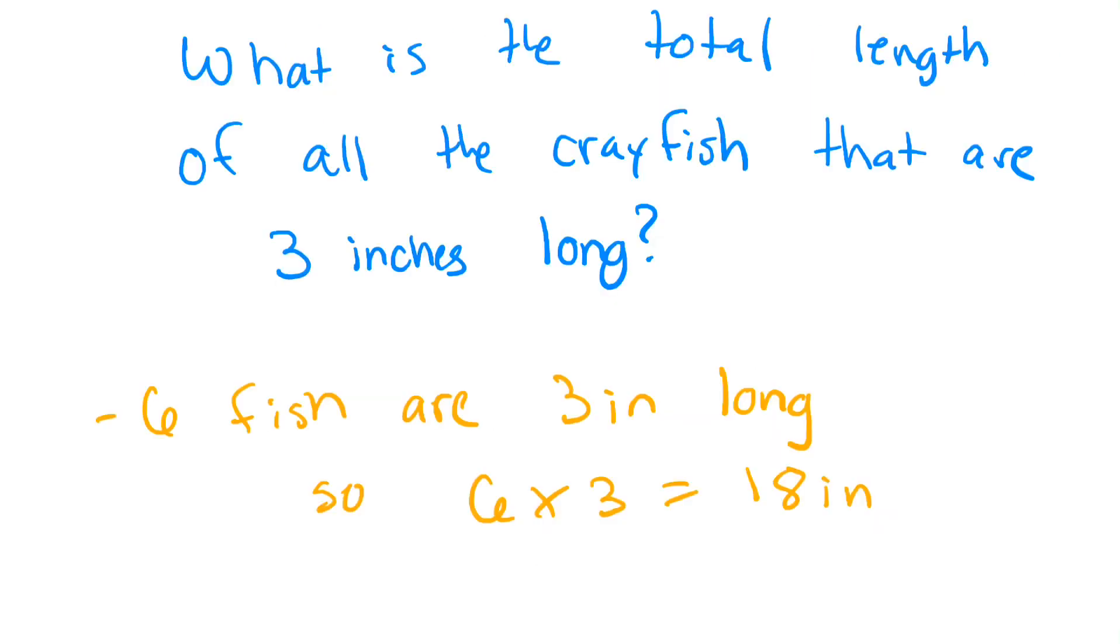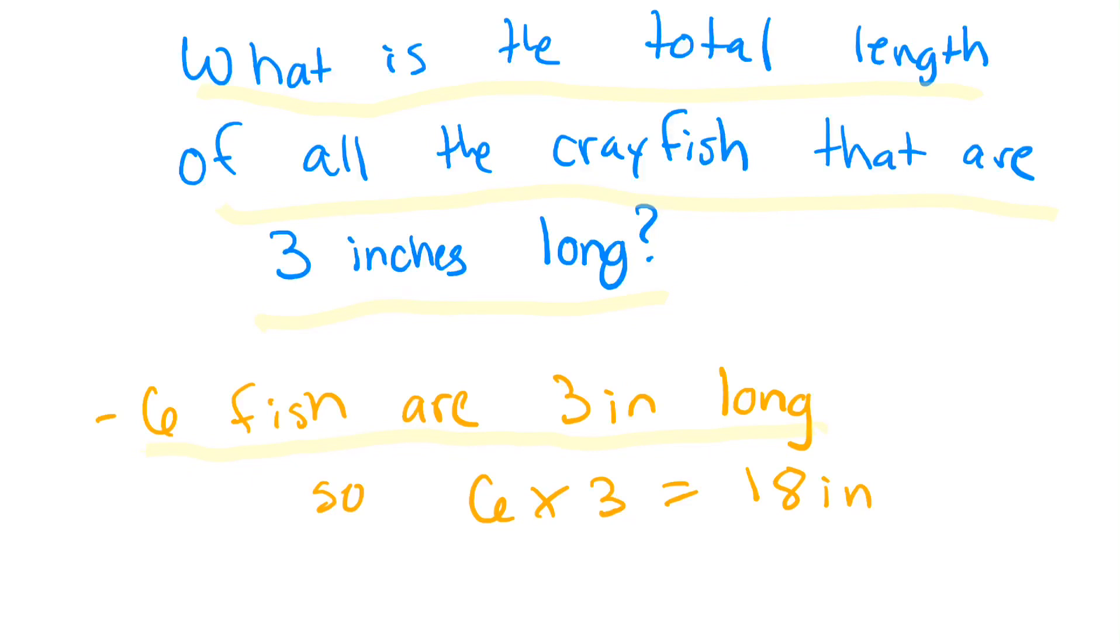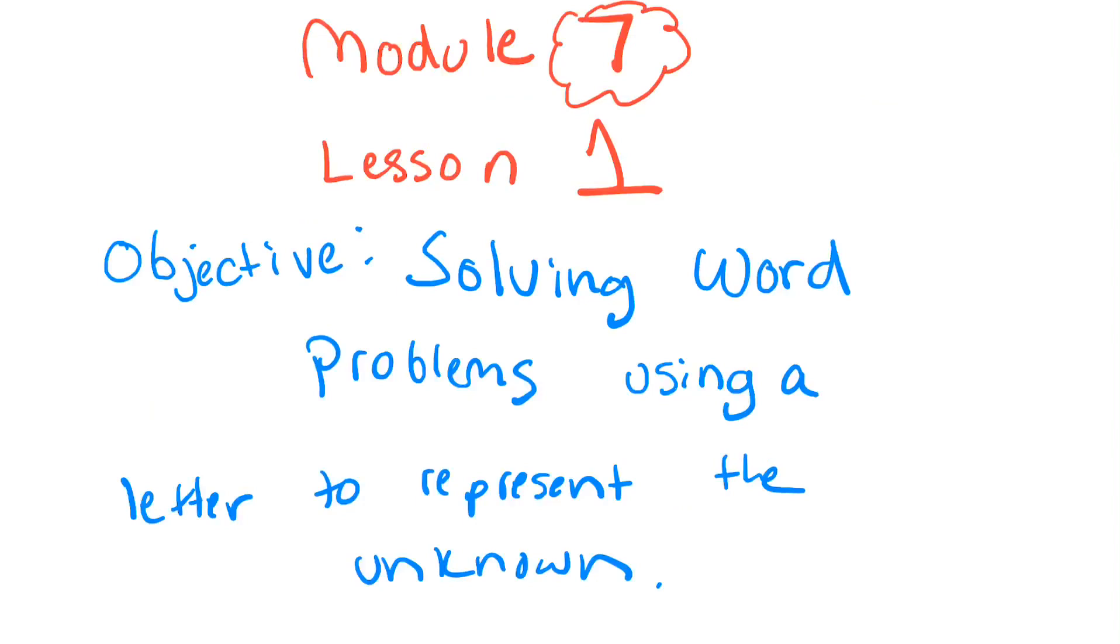Let's read the question. It says, what is the total length of all the crayfish that are 3 inches long? So you could say that 6 fish are 3 inches long. If we go back to the graph, the ones that are 3 inches, we have 1, 2, 3, 4, 5, 6. And they're each 3 inches long. So you can multiply 6 times 3 to get your total of 18 inches.